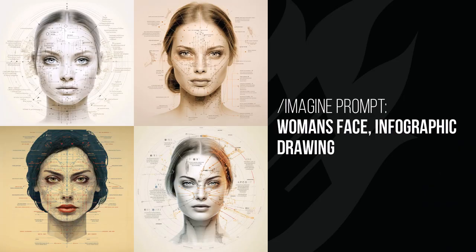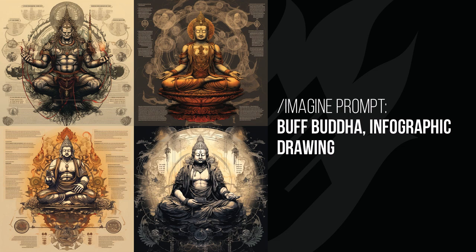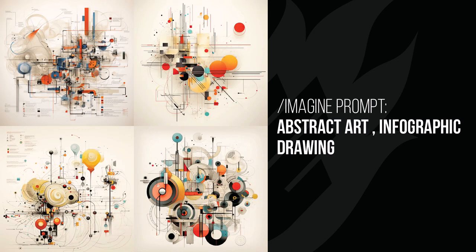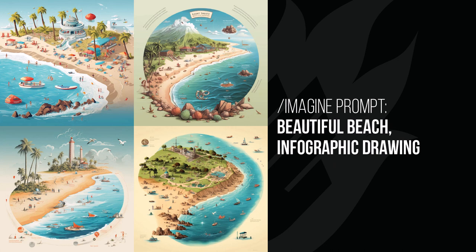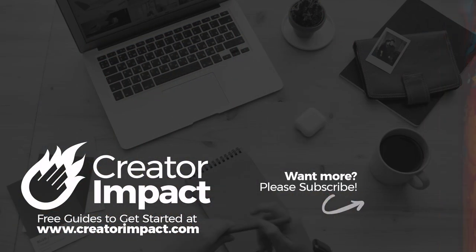The infographic drawing style adds bits and pieces of information around the image — the woman's face gets info around it, while buff Buddha almost turns into a full-blown infographic with a ton of detail. Abstract art adds what looks like information snippets; the cyborg beetle looks cool and infographic-like. The beautiful beach looks more like the illustration side of an infographic — turning what would normally be a photo into something illustrated.